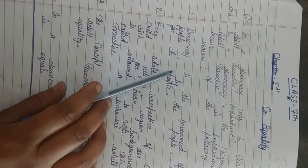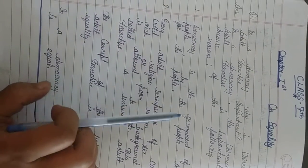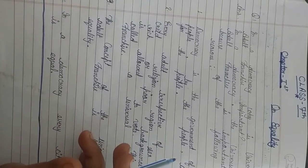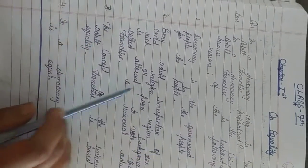First reason, democracy is the government of the people, by the people and for the people. Because democracy is a government chosen by the people, through the people, and for the people. That's why universal adult franchise is important there.